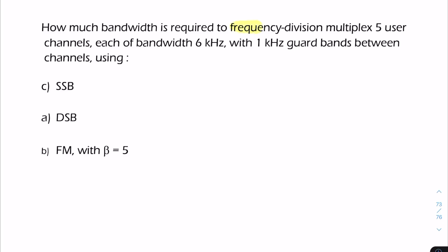Here we have frequency division multiplexing with five channels, each with a baseband bandwidth of 6 kilohertz. We need 1 kilohertz guard bands between channels. The question is: what's the total bandwidth required? For part a, we have single sideband modulation.